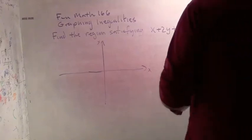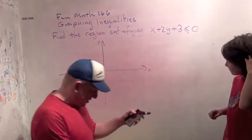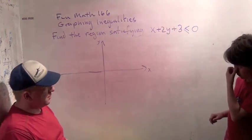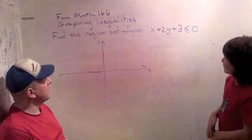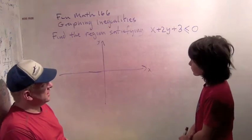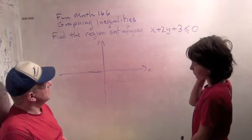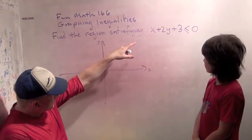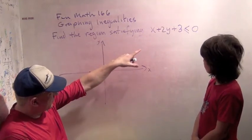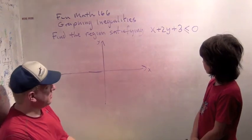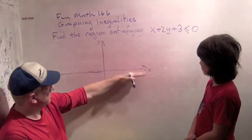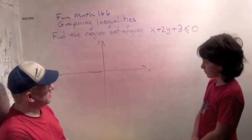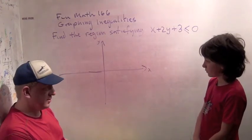Good morning. Welcome to Math number 166. Today we started section 9.4 of Art of Problem Solving's Algebra book, and it's about graphing inequalities. We're just going to take a look at a simple example I made up right now. It says find the region satisfying x + 2y + 3 is less than or equal to 0. So I gave you the x and y axis, and we're supposed to find the region in here that satisfies x + 2y + 3 is less than or equal to 0.